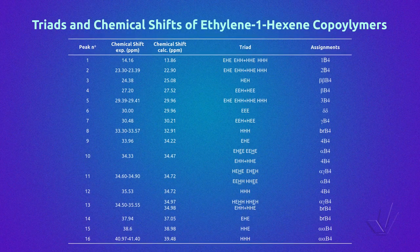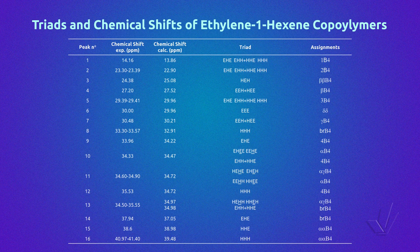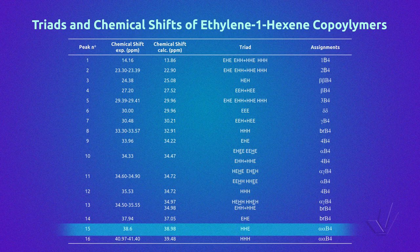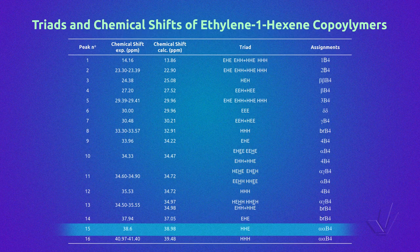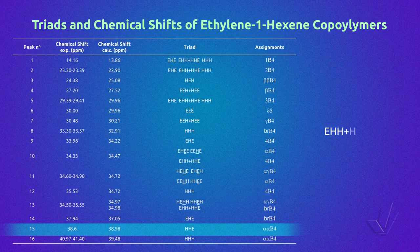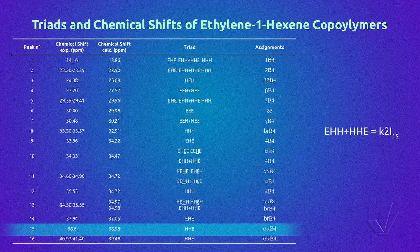Returning to the table, we can see that the triads EHH plus HHE are not isolated. Only the triad HHE is represented by peak 15, so we estimate that there can be the same amount of the triad EHH, so we can multiply the integral of peak 15 by 2. Thus, we obtain the equation: EHH plus HHE equals K multiplied by 2 times the integral of peaks 15 and 14.